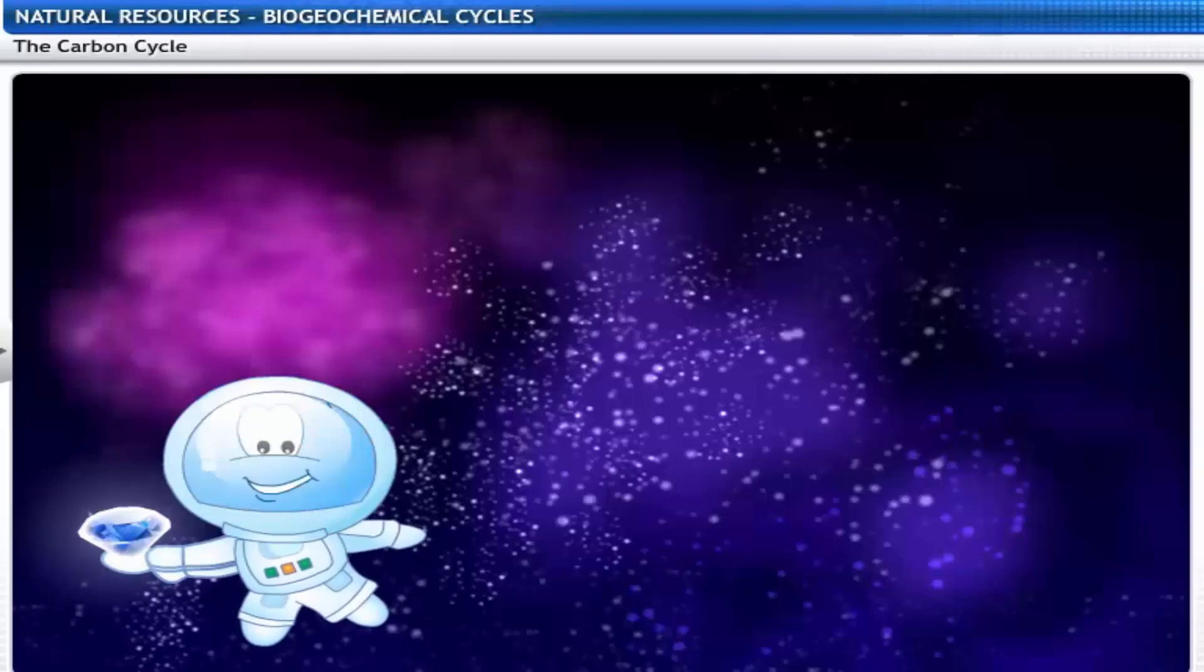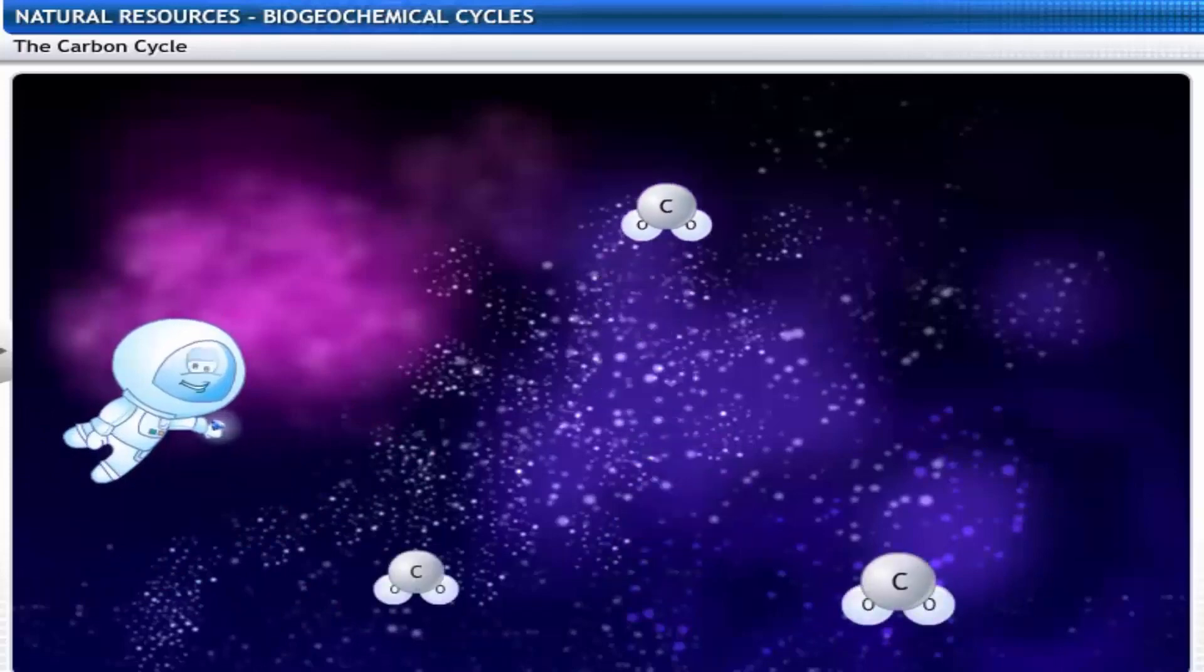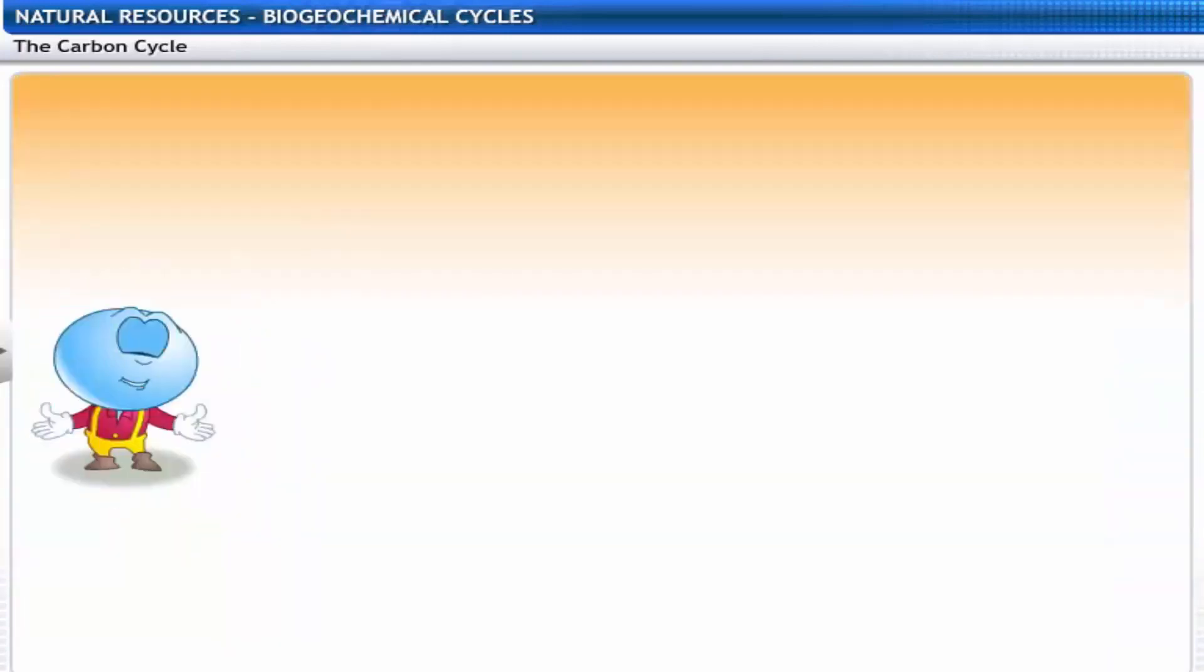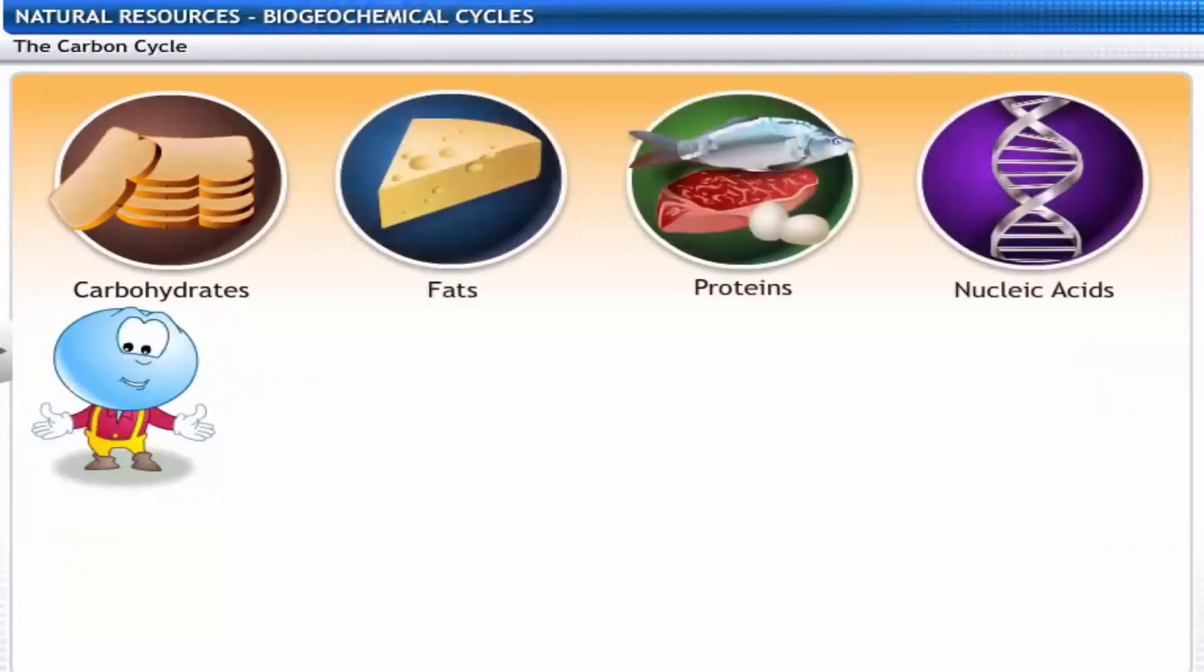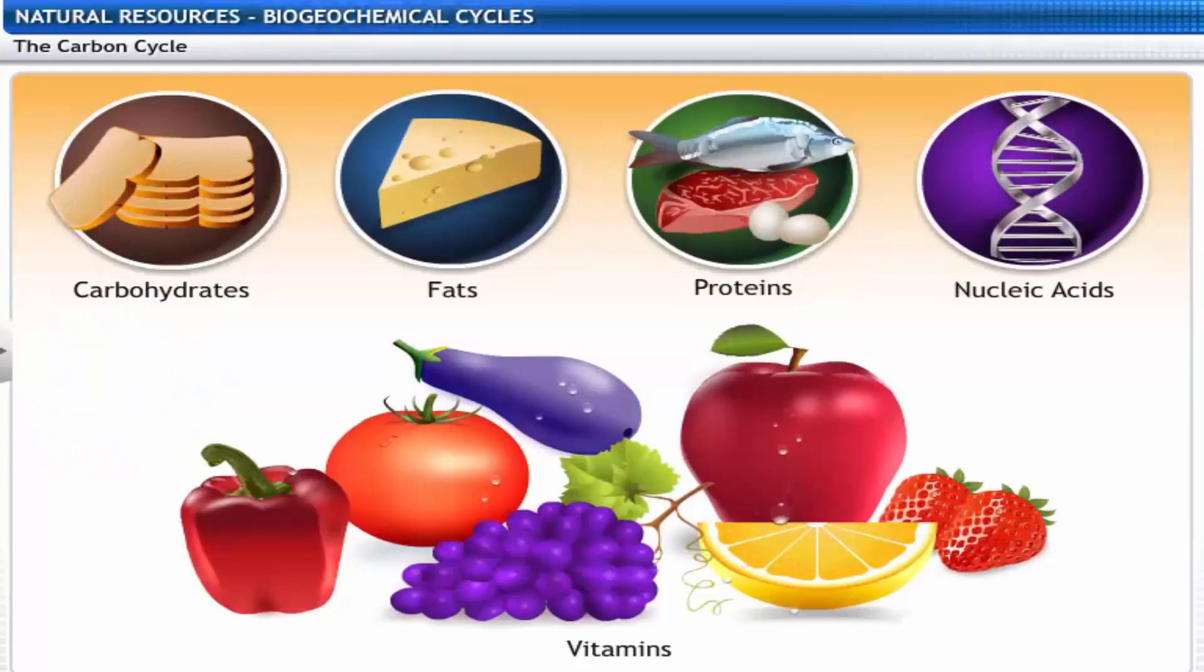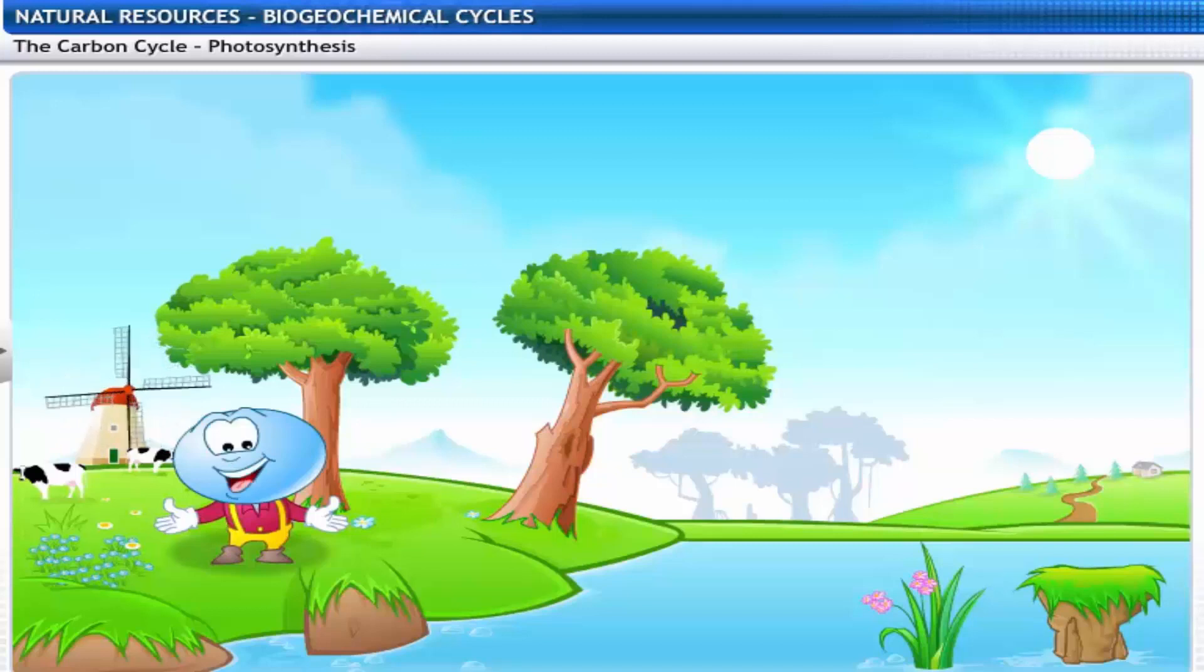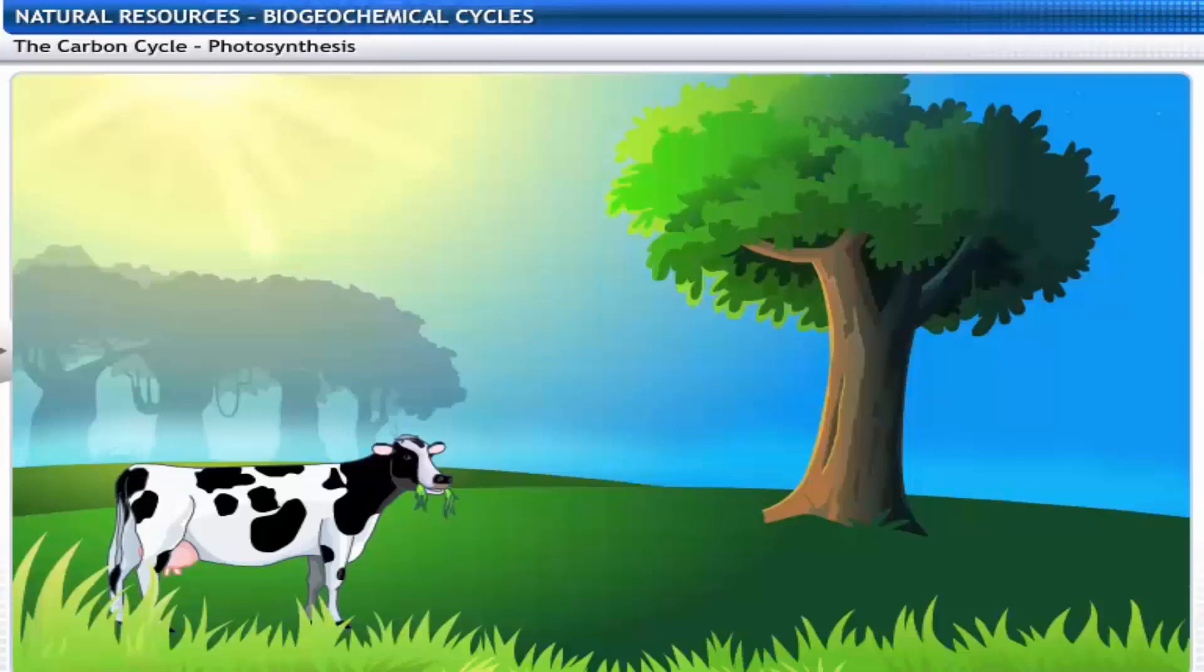Hey! Do you know what this is? It's a diamond. Do you know what it's made of? A diamond is made of an element called carbon. Carbon is found in various forms on the earth. It is present in the atmosphere as carbon dioxide and is an essential part of carbohydrates, fats, proteins, nucleic acids, and vitamins. As you can guess, it's important to maintain the correct amount of carbon in the biosphere. This happens through the carbon cycle. Let us now look at the carbon cycle in detail.